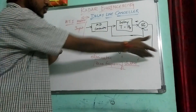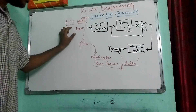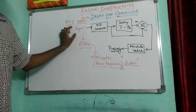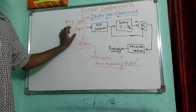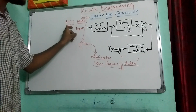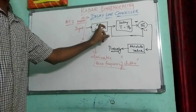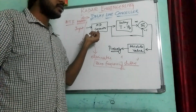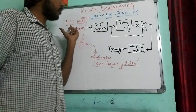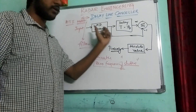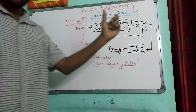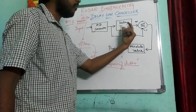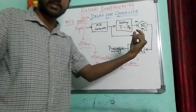This is the DLA cancelling shown. We have input coming from the radar. There are a transmission part and a receiving part. This is the input and it is given to the digital A-to-D converter. So this is a bipolar video signal — what we get is the video signal, which is converted into a digital signal. After that, whatever delay is there, this gives the delay of one pulse repetition frequency time.